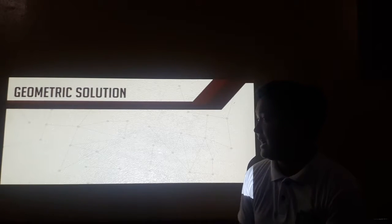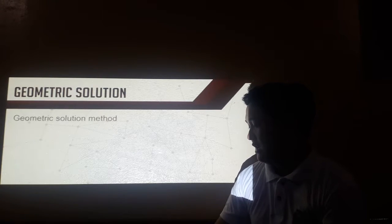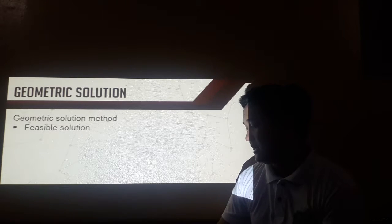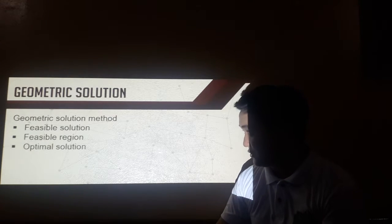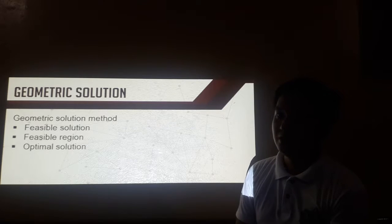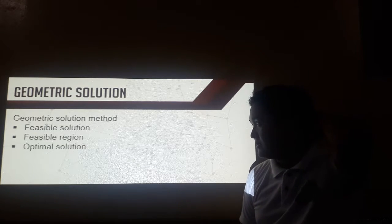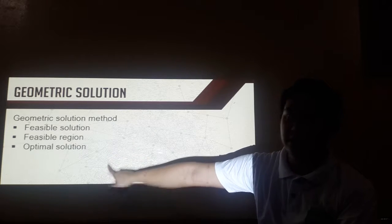Now let's try to identify the solution for the problems a while ago. We'll use what we call the geometric solution method. For the geometric solution method, we need to identify the following: the feasible solution, the feasible region, and the optimal solution. Later on, as we go on with the problems, we'll be able to identify what these three are.